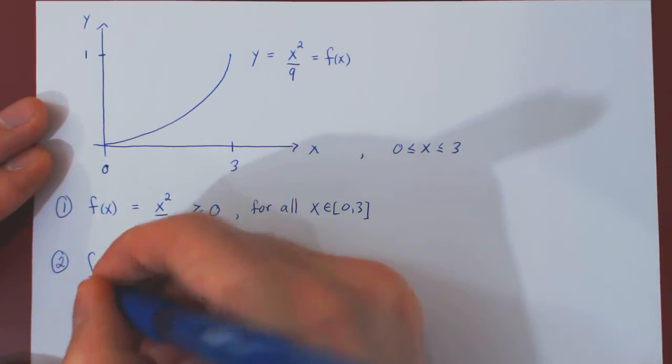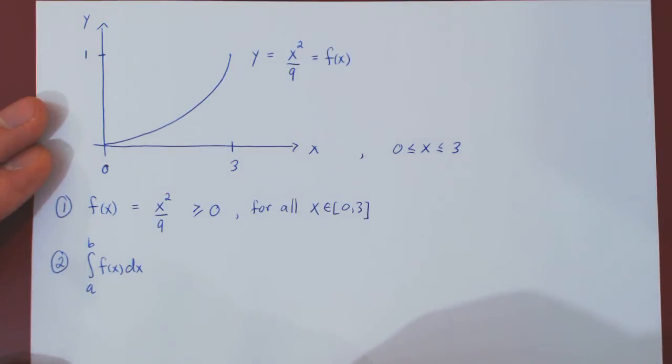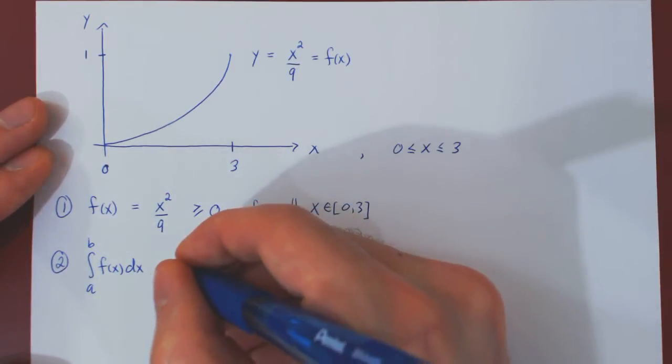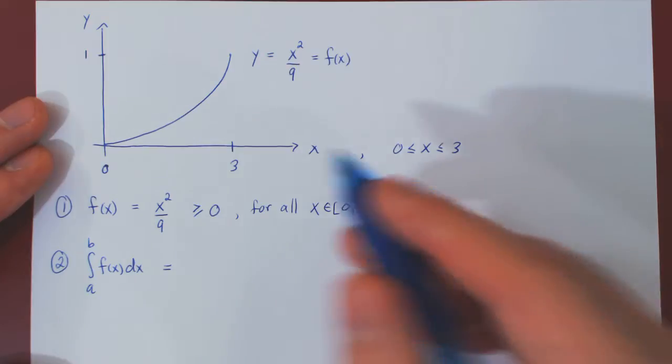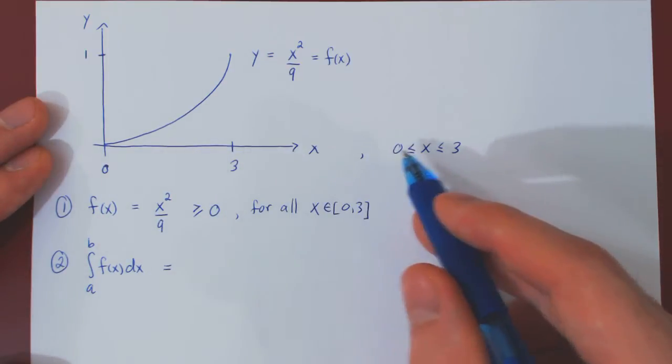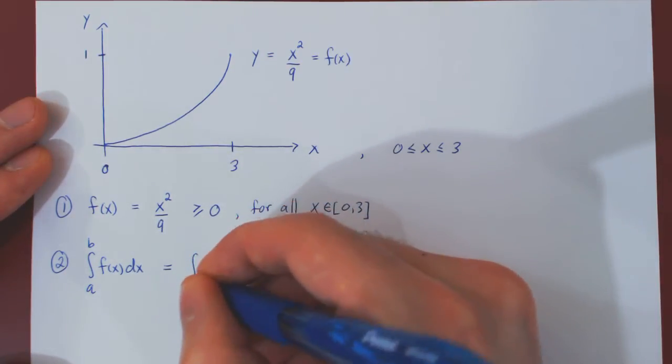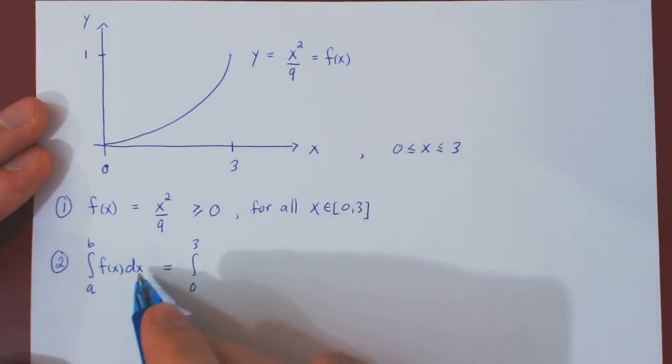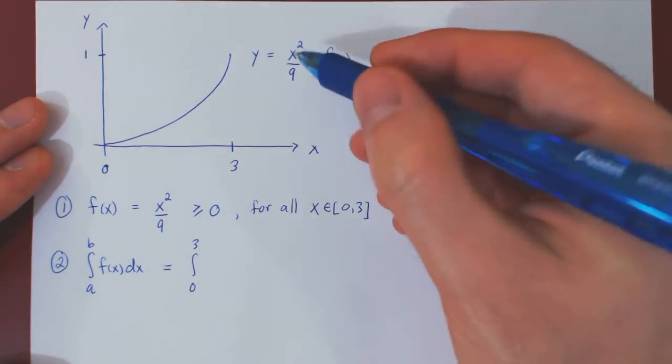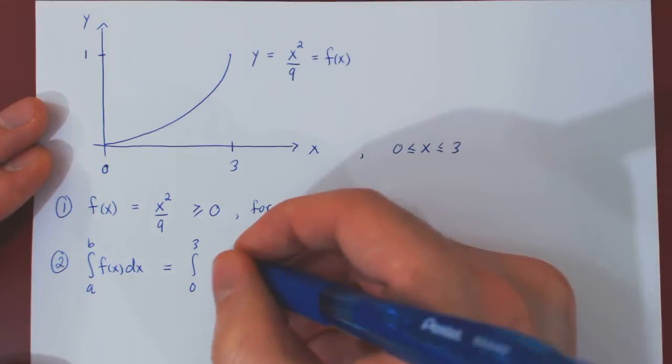And here we integrate over the entire range of possible x values. Well, we can now substitute. The range of x values is 0 to 3. The density function, or at least what we hope is the density function, is simply x squared over 9.